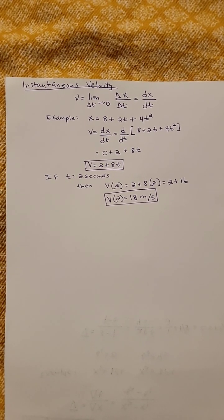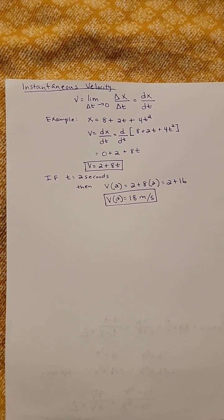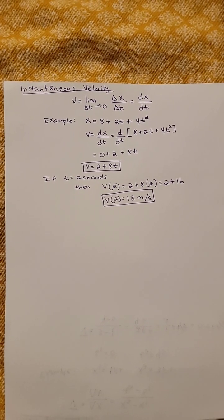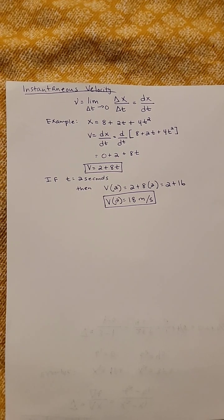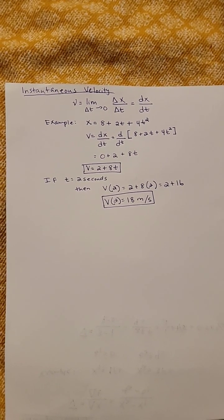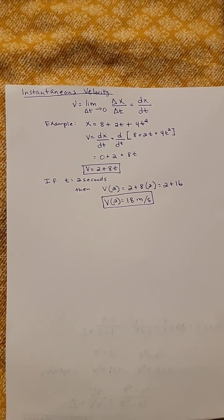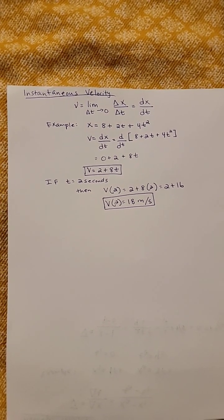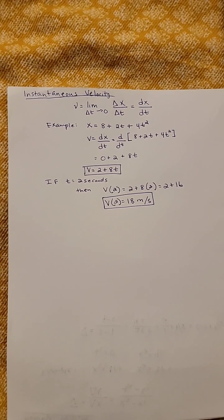For example, let's assume the displacement x is equal to 8 plus 2t plus 4t squared. If we take the derivative of this displacement, we obtain an equation for velocity. So in our case, velocity is equal to 2 plus 8t.